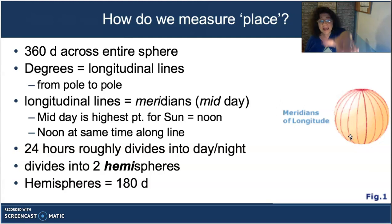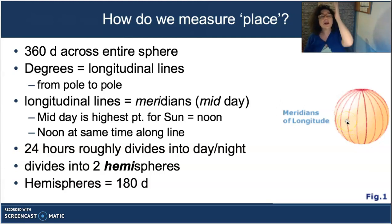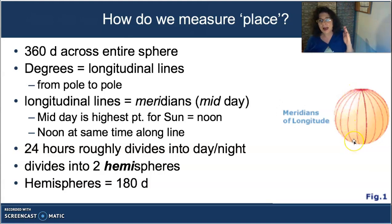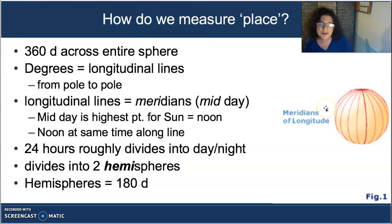The sun won't be at the same angle in all three places — it will be highest at the equator and lower in New York and New Zealand — but it will be at its highest point for the day along that same meridian line. That's why these lines are called midday, or meridian, lines.